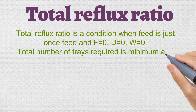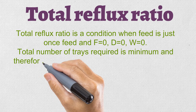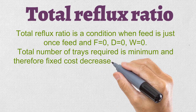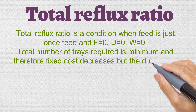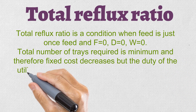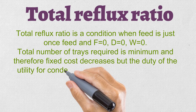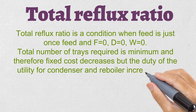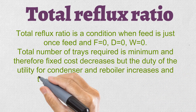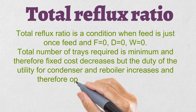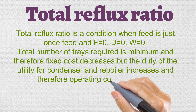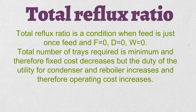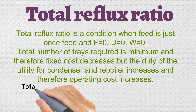In the case of total reflux ratio, the number of trays required is minimum, meaning at a minimum number of trays we can achieve good separation. Because of this, the fixed cost decreases, but the duty of utilities increases — the duty of the condenser and reboiler increases, meaning more steam must be supplied and more cooling medium is used for achieving the separation, causing operating cost to increase.